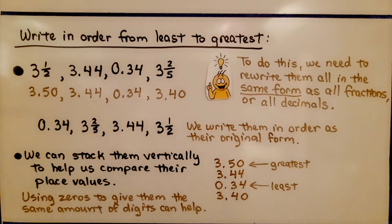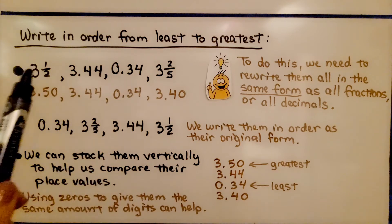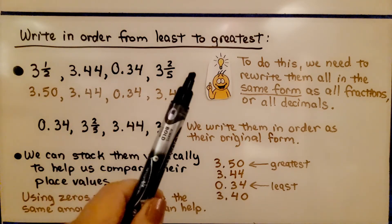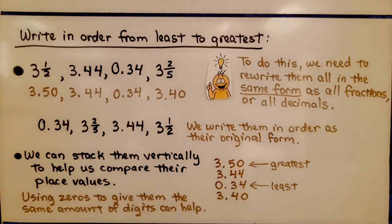It's telling us to write these fractions and decimals in order from least to greatest. To do this, we need to rewrite them all in the same form, as all fractions or all decimals.